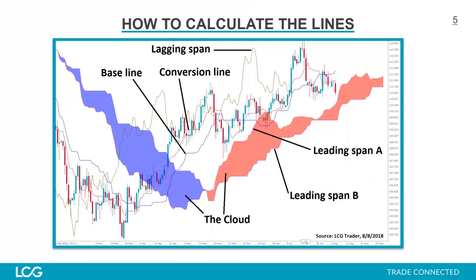Let's have a look at what we're dealing with. The main element is the cloud, which changes color. On our platform, when it's purple you're in a downtrending environment; when it's red you're in an uptrending environment. You can set it to different colors. The cloud is made up of two lines — Leading Span A and Leading Span B — and the difference between those two lines is shaded in to give you that cloud formation. It's when one line crosses the other that the color changes.